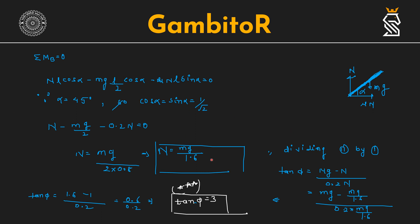Now dividing equation 1 by equation 2, we get tan phi equal to Mg minus N divided by mu N, that is 0.2 N. And N is Mg upon 1.6. That is tan phi equal to 1.6 minus 1 upon 0.2 equal to 0.6 upon 0.2. That is tan phi equal to 3. That is our answer.